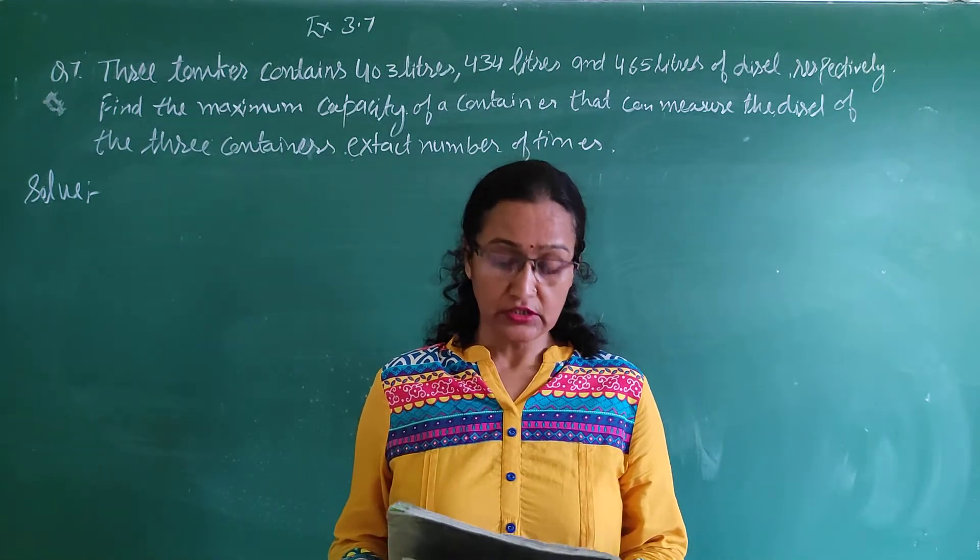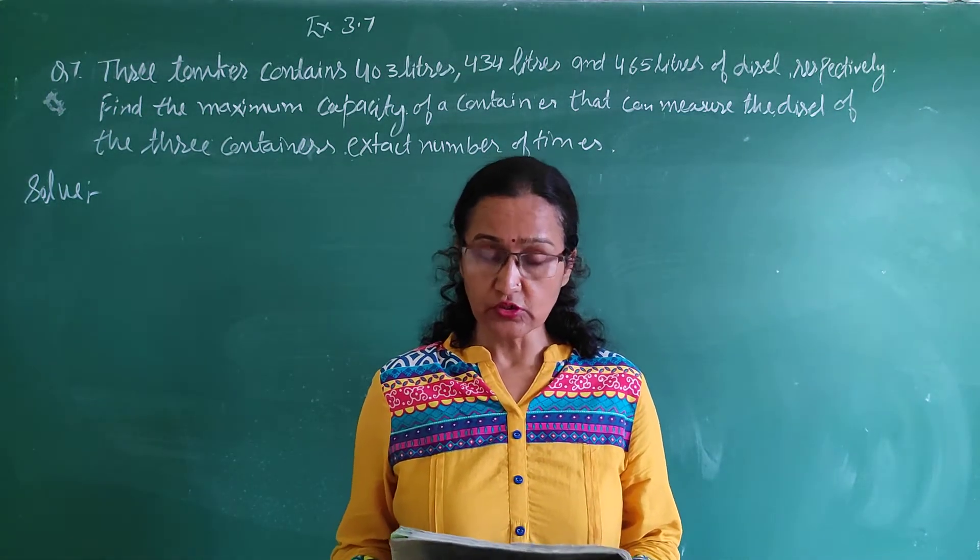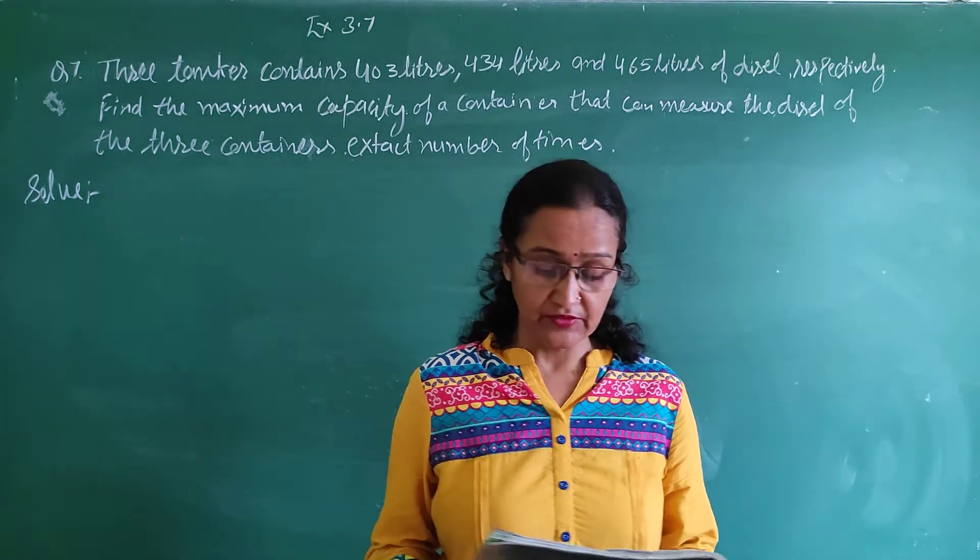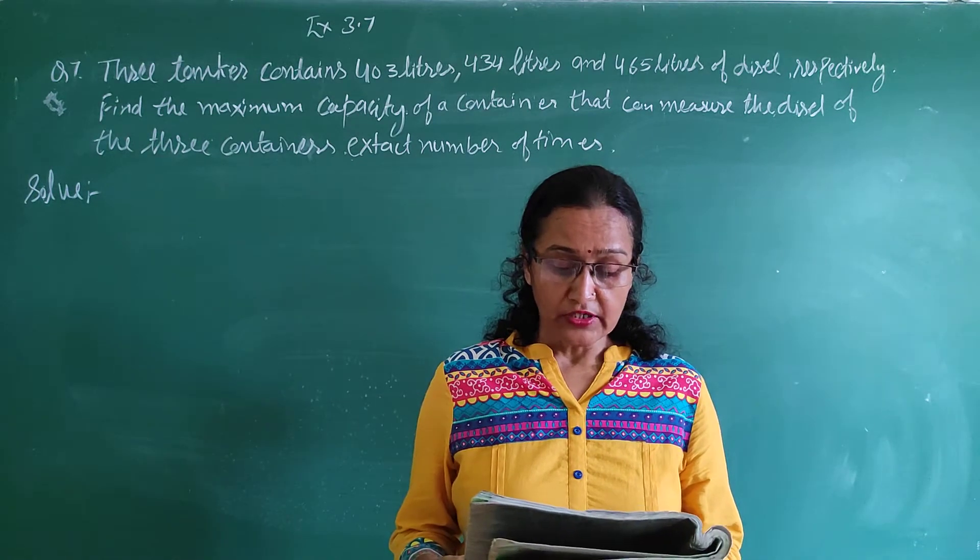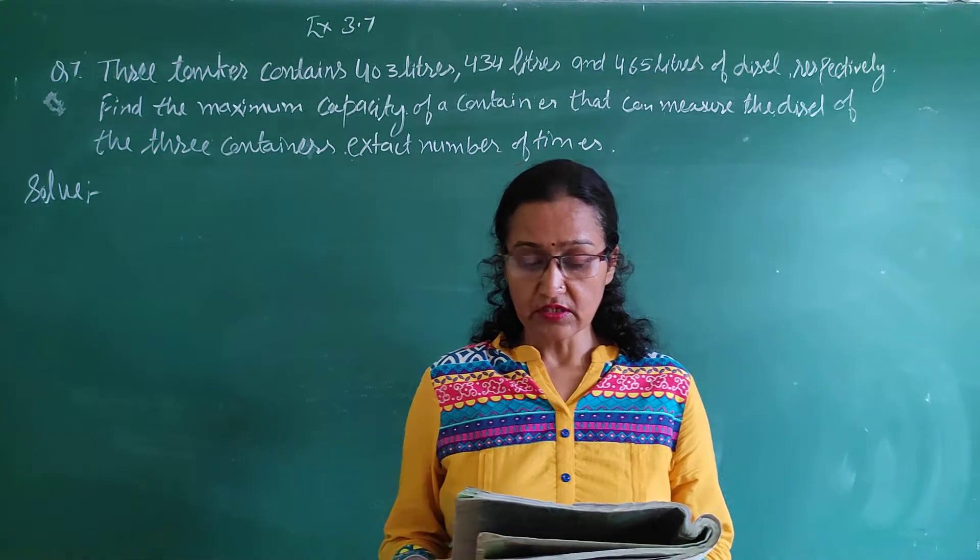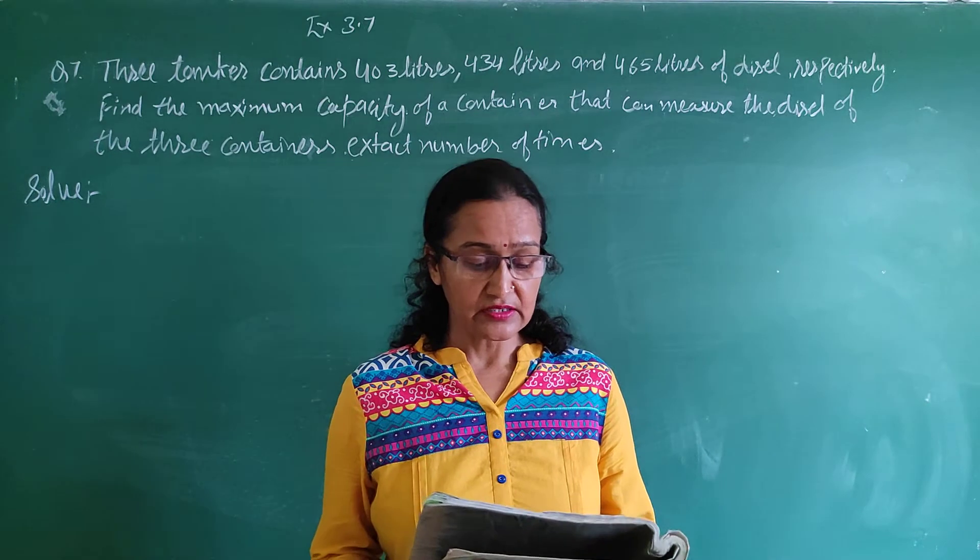Three containers contain 403 liters, 434 liters and 465 liters of diesel respectively. Find the maximum capacity of containers that can measure the diesel of the three containers exact number of times.